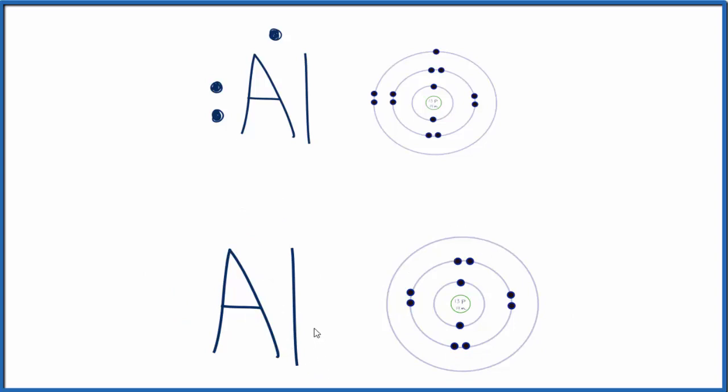So now we have Al3+. And that would be a reasonable way to write the Lewis structure for the aluminum ion. We should probably get rid of this outer shell here because there's nothing in it. When we do that, you'll notice something interesting. We've lost those three electrons, and we have eight electrons in that highest energy level or outer shell right below this one here. So we have a full outer shell. We have an octet. It's very stable.